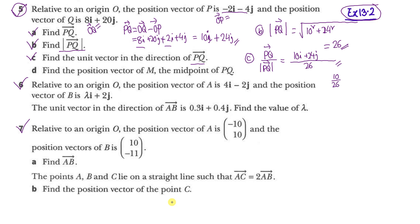Best practice is to write the answer in simplest fraction form with individual i and j components. So 10 over 26 simplifies to 5 over 13, and 24 over 26 simplifies to 12 over 13. The final answer is (5/13)i plus (12/13)j. The property of the unit vector is that if we take its modulus again, we get 1.